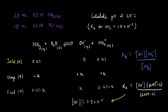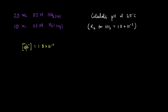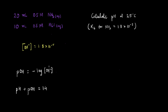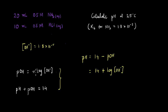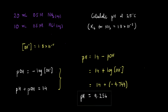Now that we know [OH⁻] = 1.8 × 10⁻⁵, we calculate the pH using two relations: pOH = −log[OH⁻], and pH + pOH = 14. So pH = 14 + log[OH⁻]. Plugging in the value, log(1.8 × 10⁻⁵) = −4.744, so the pH = 14 − 4.744 = 9.256.